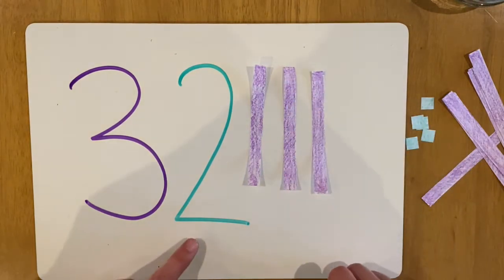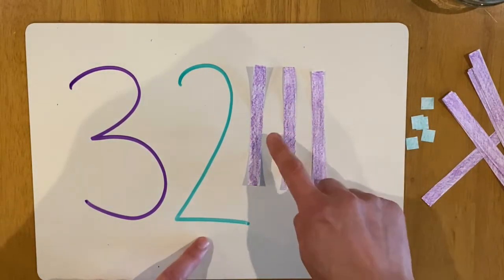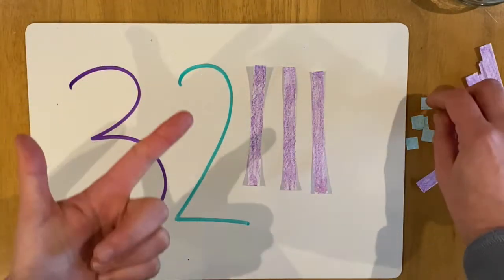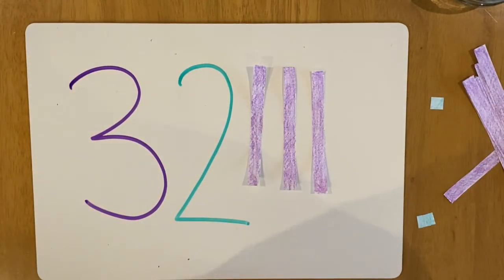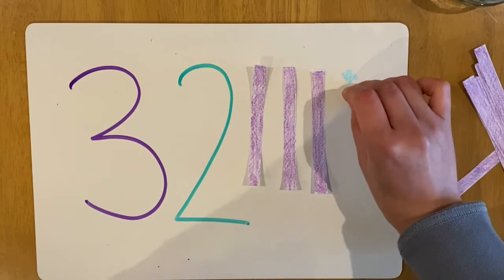Now how many ones are we going to need? 10, 20, 30, 31, 32. Two ones. 31, 32.